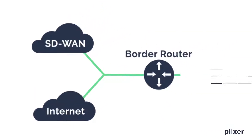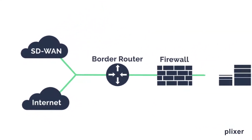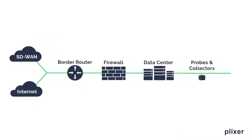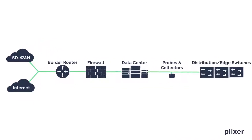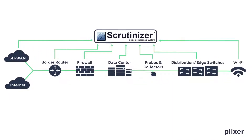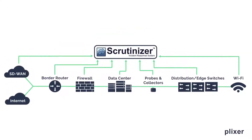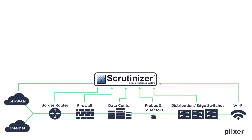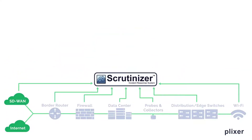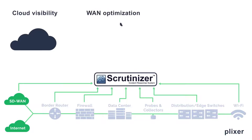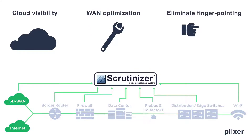Scrutinizer from Plixer visualizes and reports on flow and metadata telemetry, gathered from all areas of your network. This rich context enables IT to gain better cloud visibility, to optimize their WAN, and to deliver the proof needed to eliminate the finger pointing that often occurs from cloud and WAN providers.